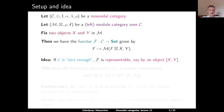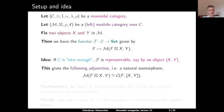Idea: under some assumptions on C, the functor F is representable — let us say by some object which we denote by [X, Y]. This gives the following adjunction, that is a natural isomorphism between the morphism set in M from F acting on X to Y, and the morphism set in C from F to the object [X, Y].